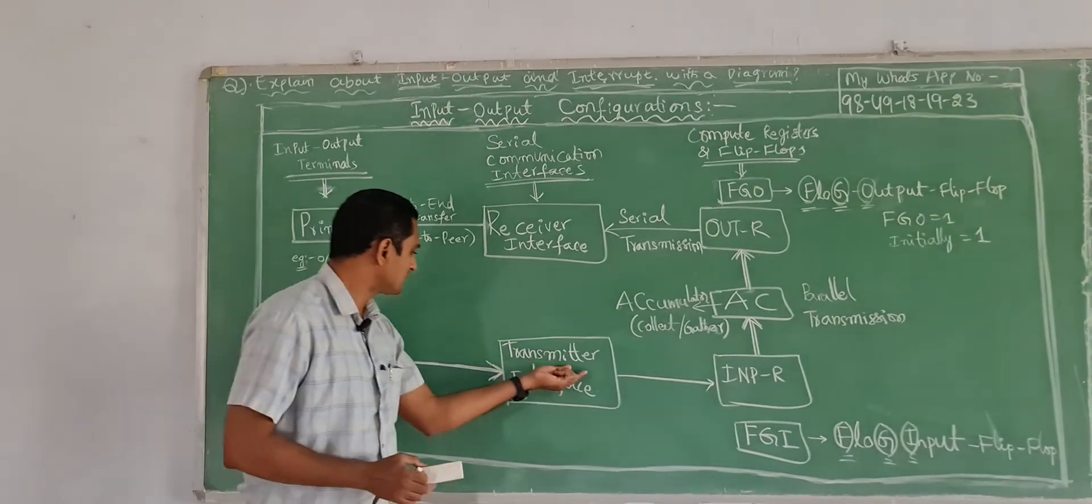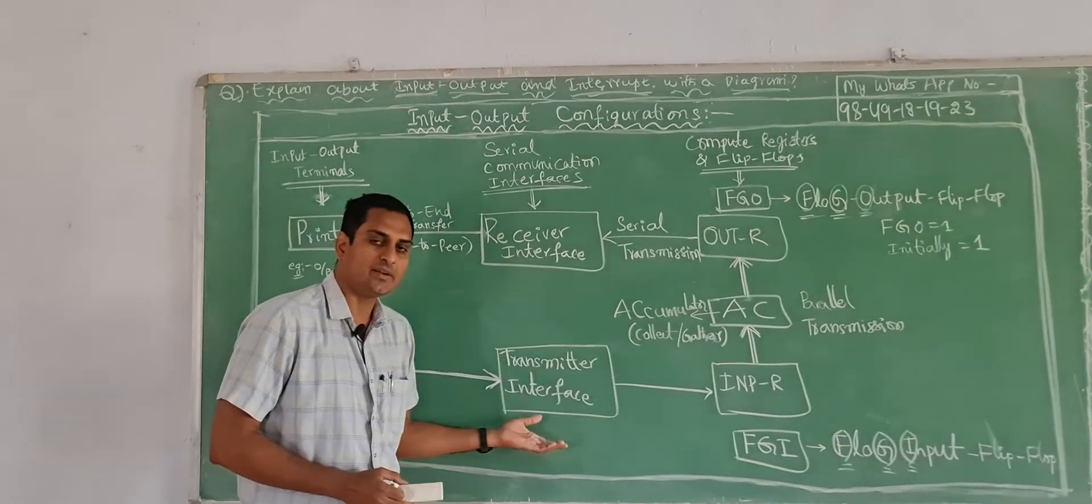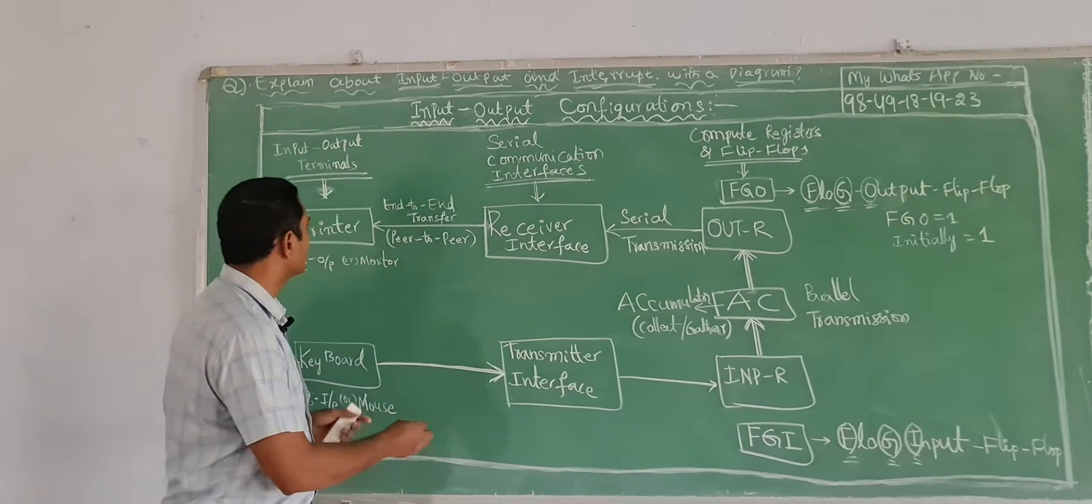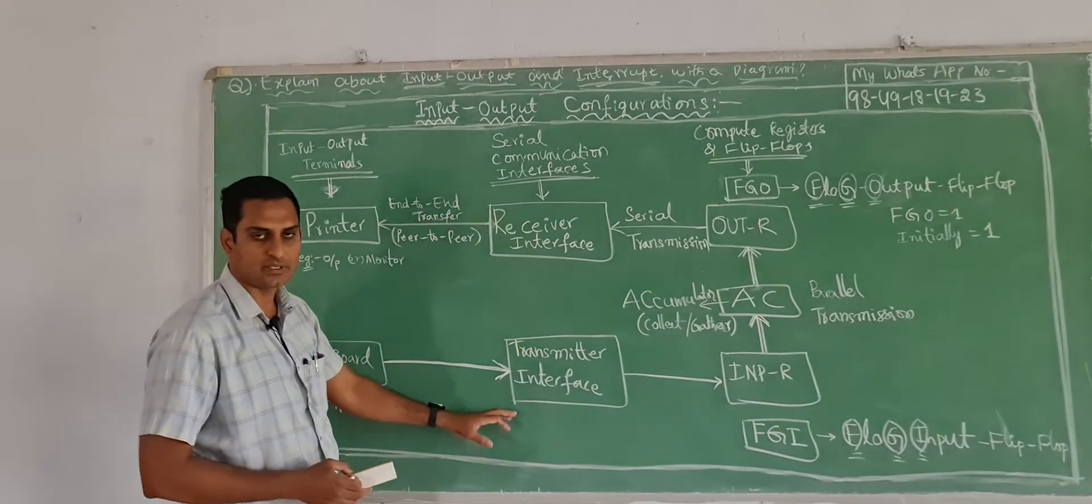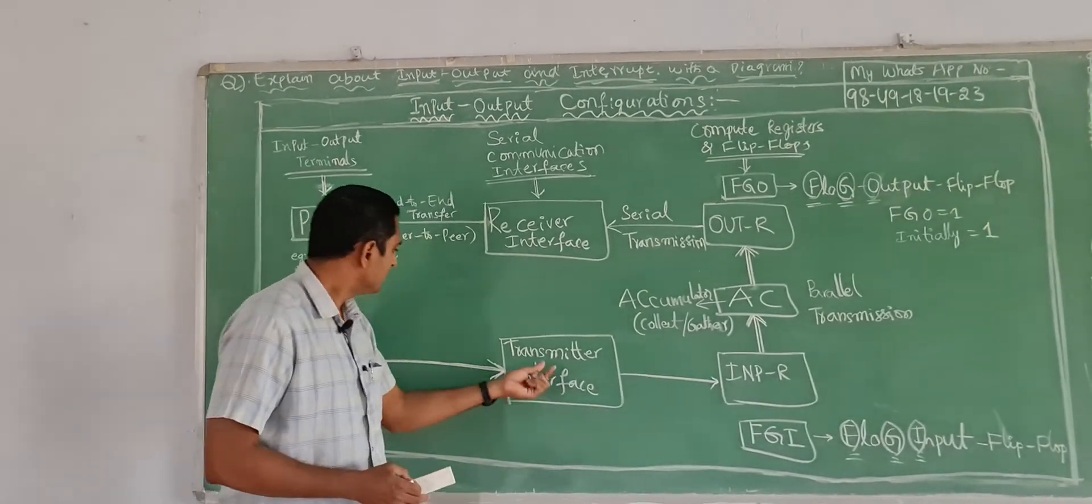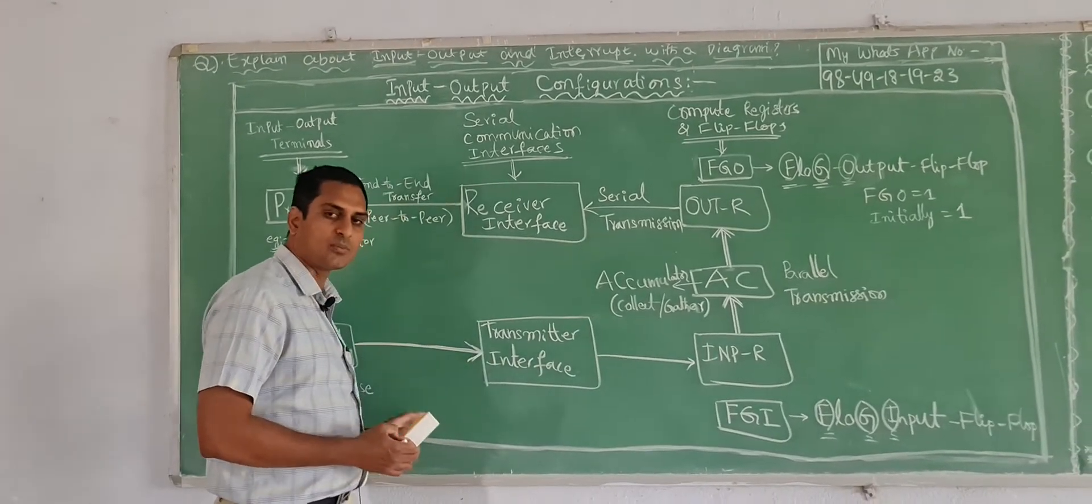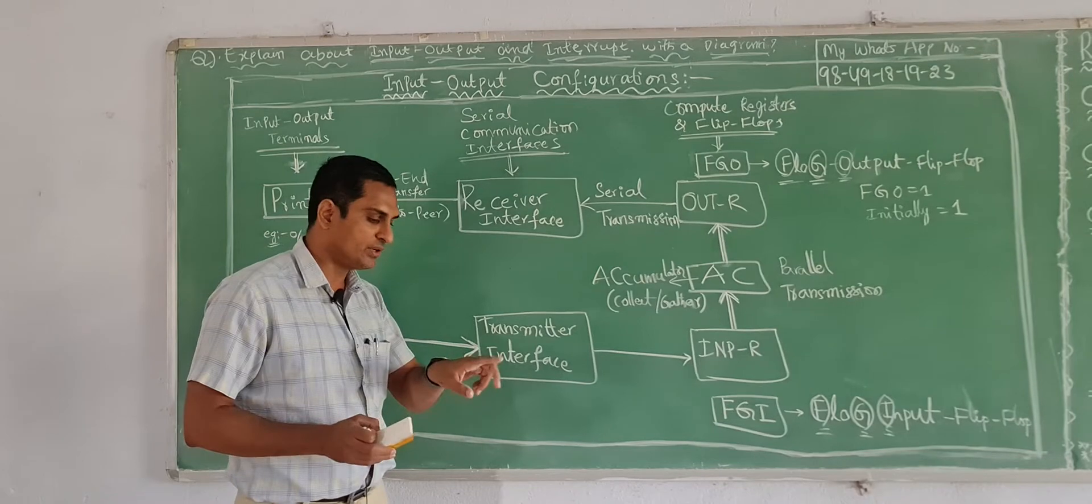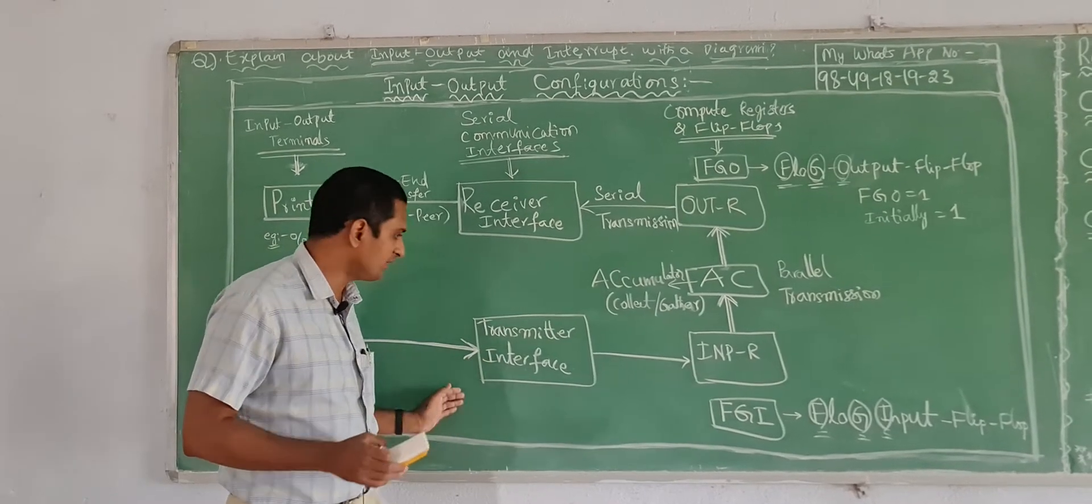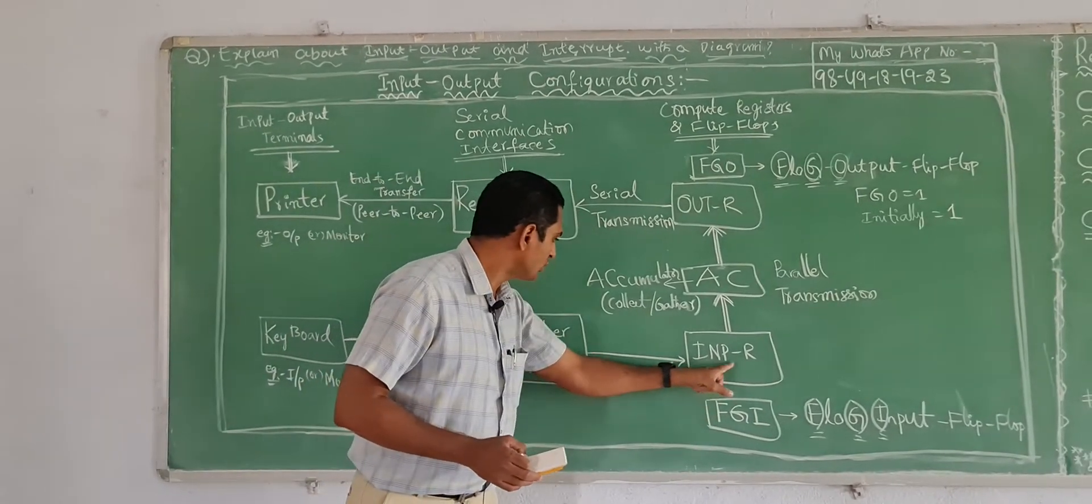Here it transferred to transmitter interface, this is the interface. Here we will have serial communication, serial line by line. Transmitter interface, it will transmit the data from the keyboard or mouse. If you type any data, if you do any clicks from the keyboard, it will transmit to the input register.